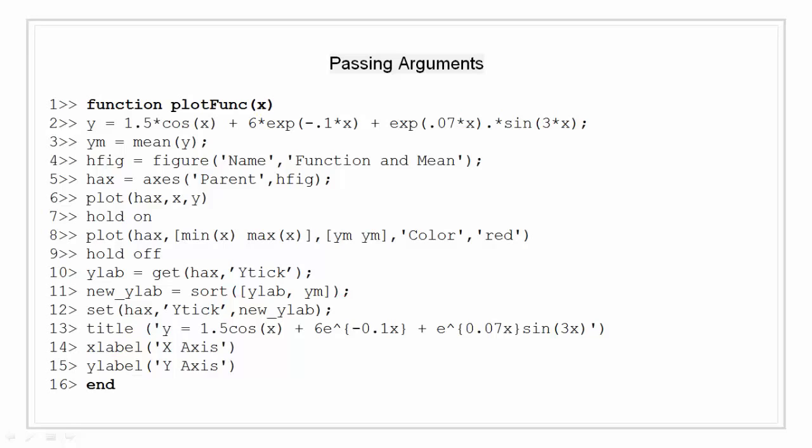So here in line 1, function plotFunc is defined and it is told that it will take a single argument. The second line represents the mathematical figure that needs to be solved using the passed argument. The third line calculates the mean of y. In the fourth line, I have created a figure with handle hfig. Then I have created an axis with handle hax. I am plotting x and y on the axis hax.